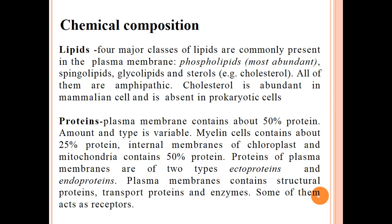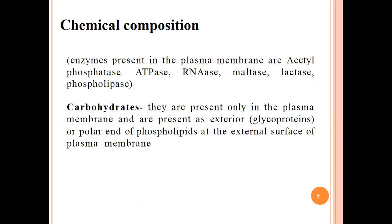There are also some receptors present in the cell membrane. Structural proteins give a specific structure to the cell membrane; transport proteins help to move ions, molecules, or different compounds from inside or outside of the cell. Enzymes present in the plasma membrane include acetyl phosphatase, ATPase, RNase, maltase, ductase, and phospholipase. Carbohydrates are also part of the chemical composition, present only on the plasma membrane at the exterior or polar end of the phospholipids at the external surface.